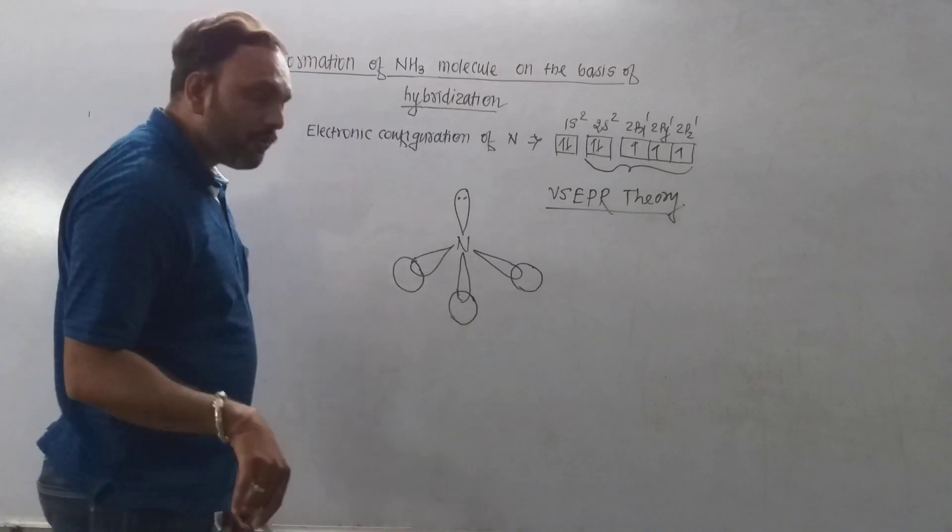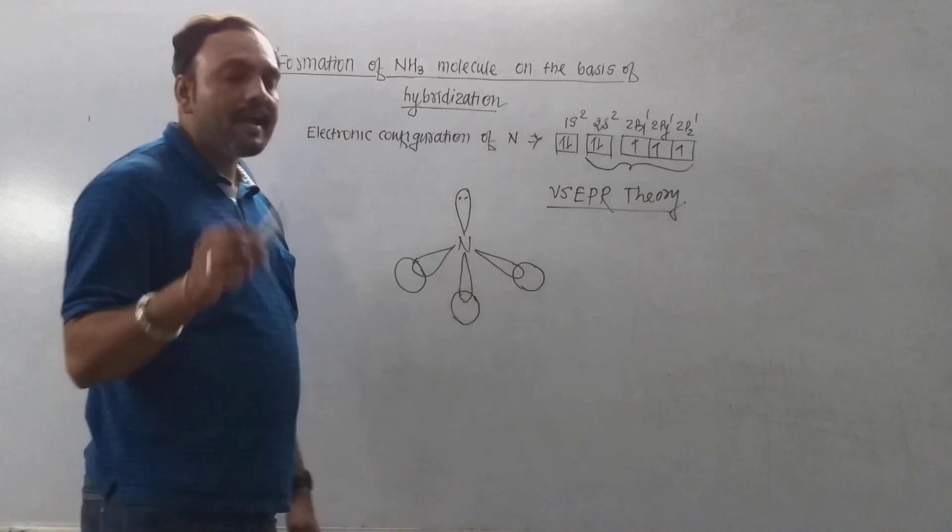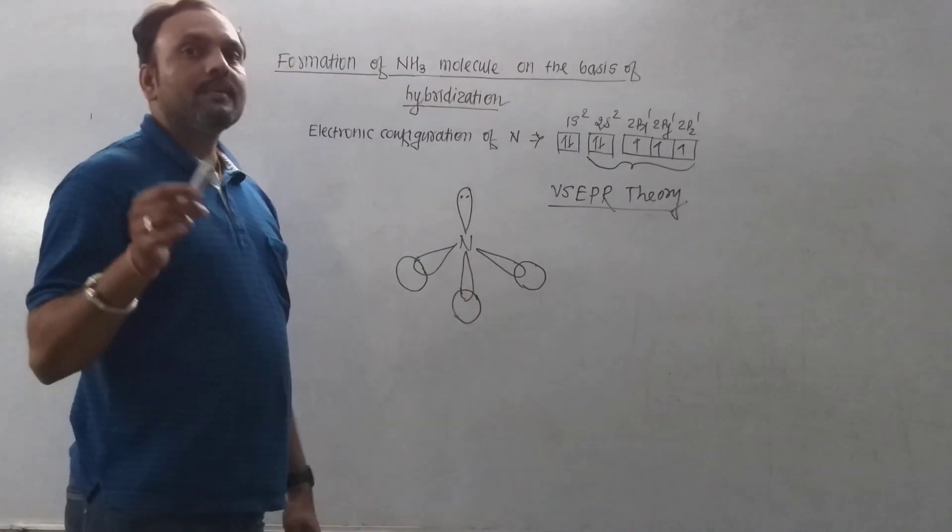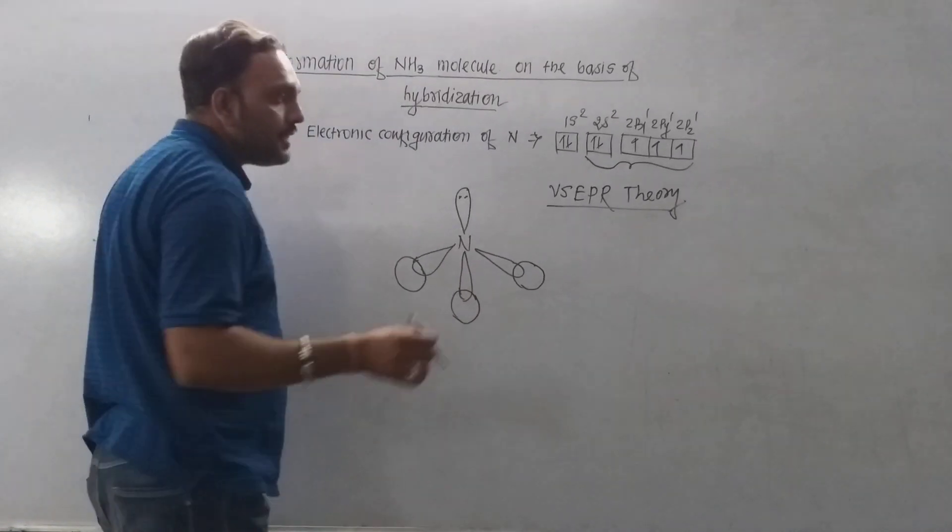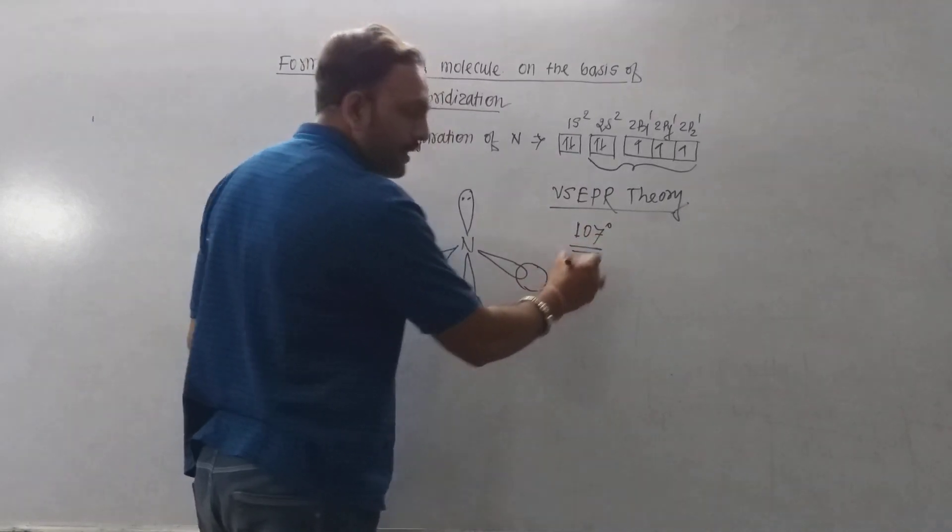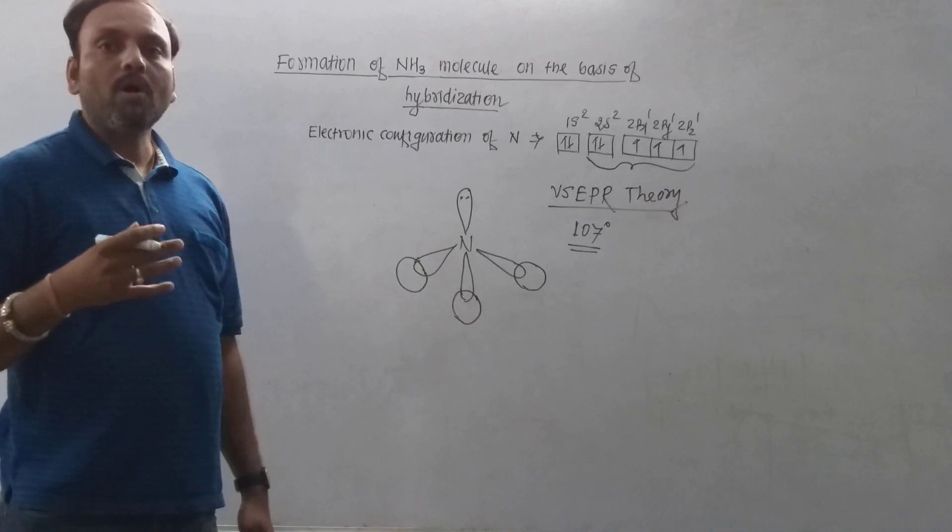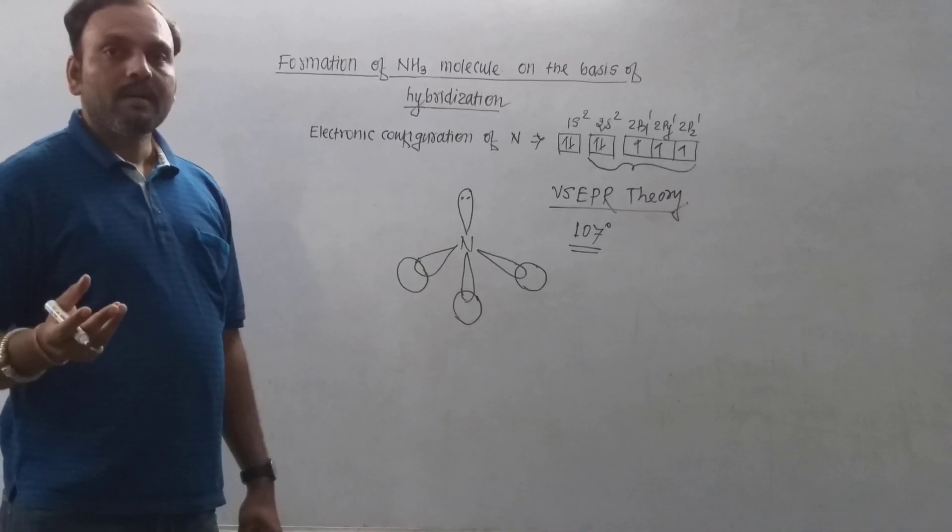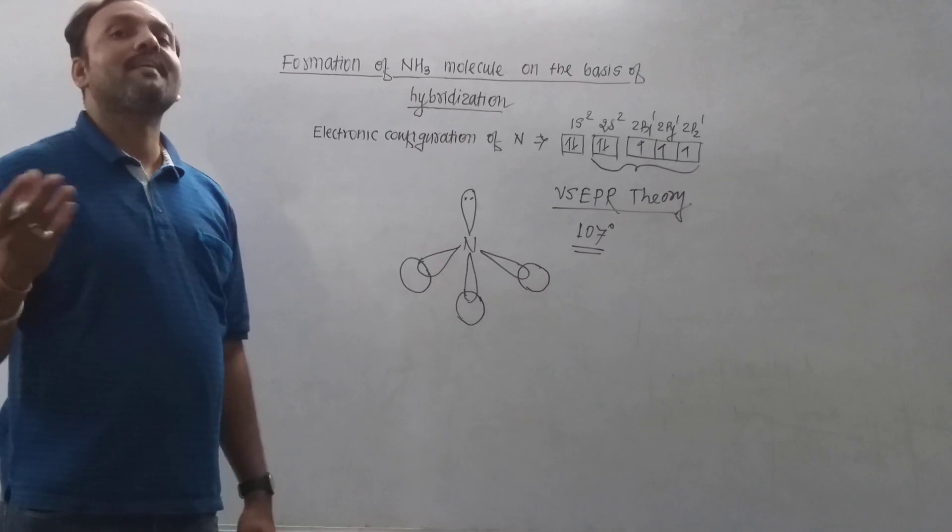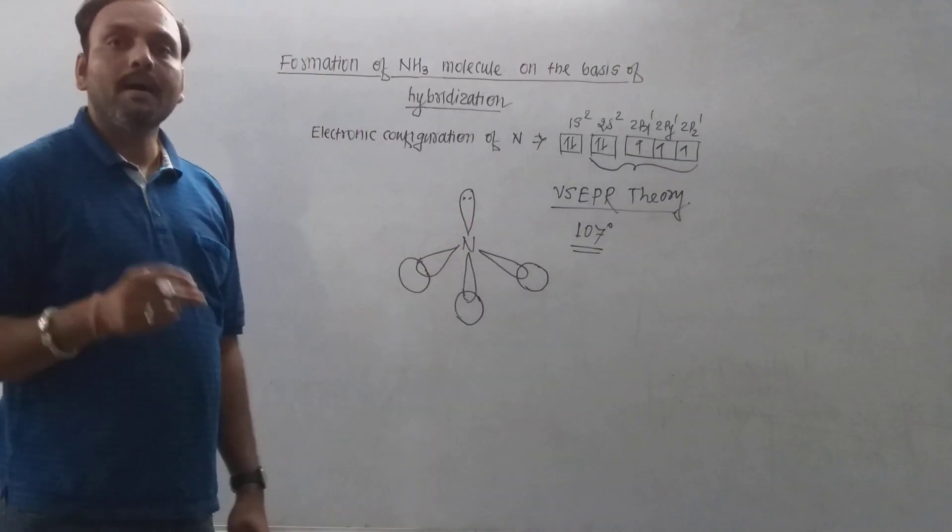Due to this, the bond angle in ammonia is reduced to 107 degrees and its geometry is somewhat distorted. Instead of tetrahedral, it is pyramidal in case of ammonia.